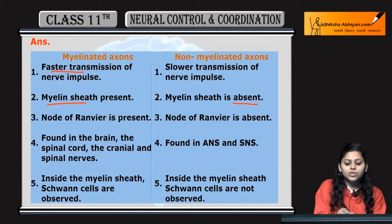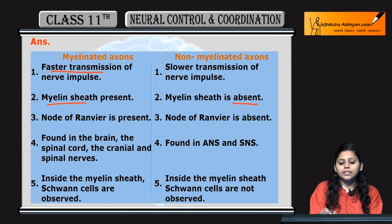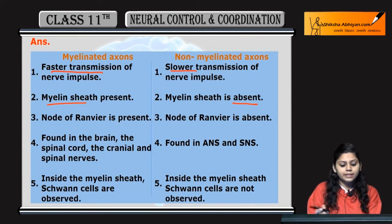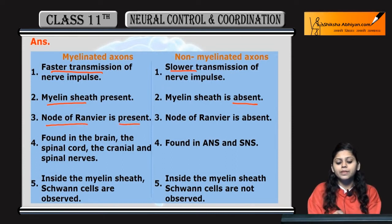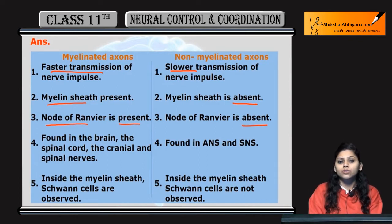Point 2: Faster transmission hoti hai nerve impulses in myelinated axons and slower in non-myelinated. Point 3: Nodes of Ranvier present hain in myelinated axons but absent in non-myelinated axons.